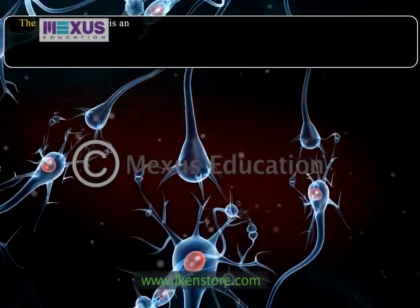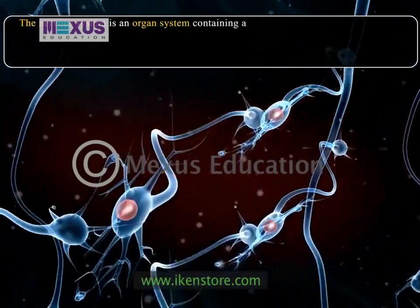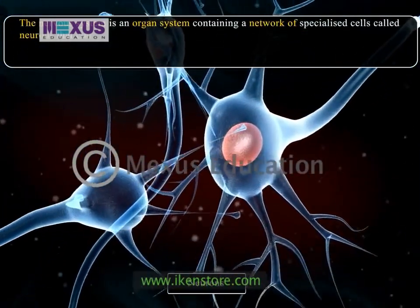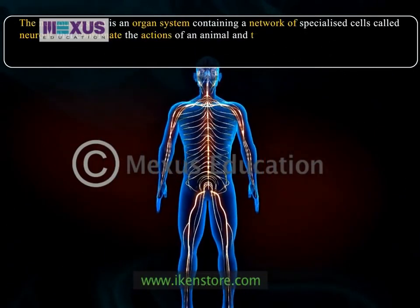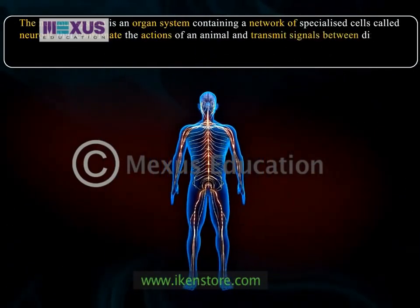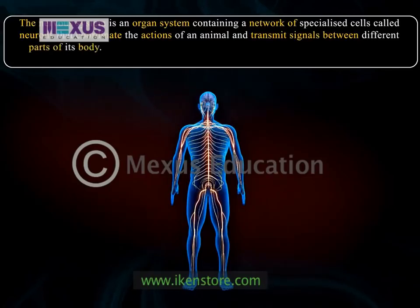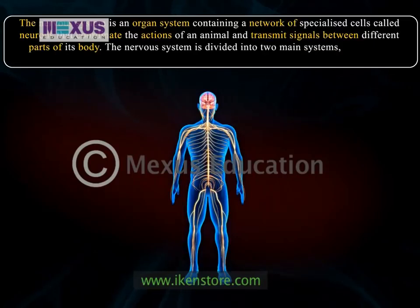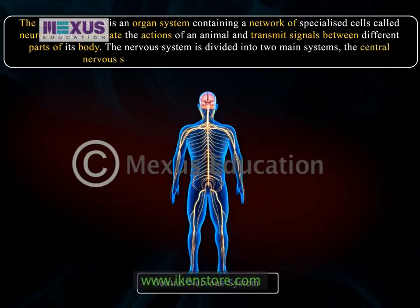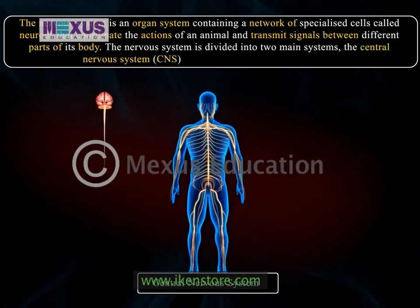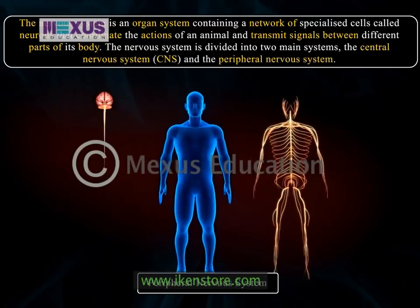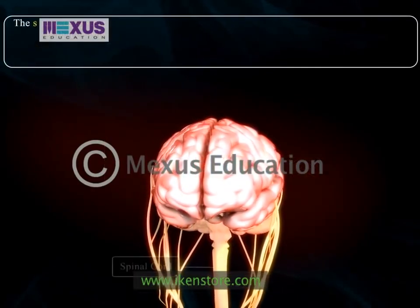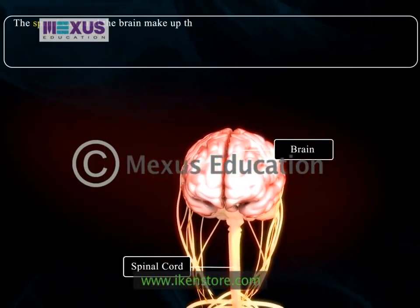The nervous system is an organ system containing a network of specialized cells called neurons that coordinate the actions of an animal and transmit signals between different parts of its body. The nervous system is divided into two main systems: the central nervous system, that is the CNS, and the peripheral nervous system.